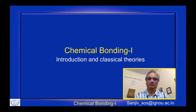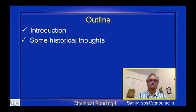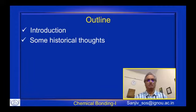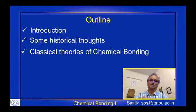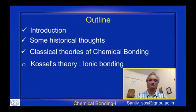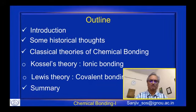Today we will talk about an introduction to chemical bonding and classical theories of chemical bonding. We will first introduce the topic, then look at some historical thoughts, and then focus on the classical theories — specifically Kossel's theory concerning ionic bonding and the Lewis theory regarding covalent bonding. After covering all this, we will sum up the session.